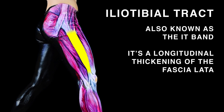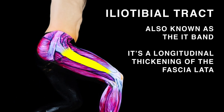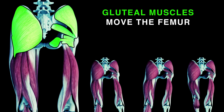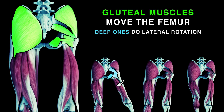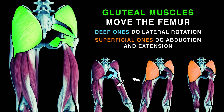A longitudinal thickening of the fascia latae — understand. Gluteal muscles move the femur; deep ones do lateral rotation, while superficial muscles do abduction and extension.